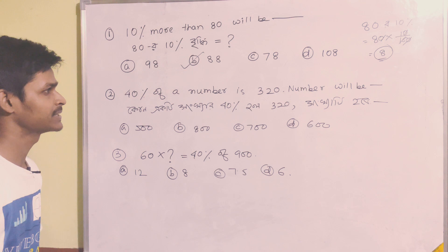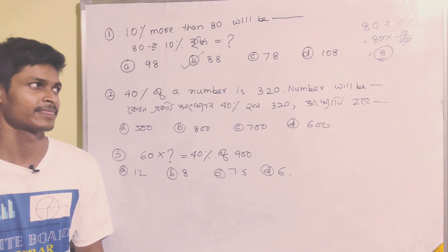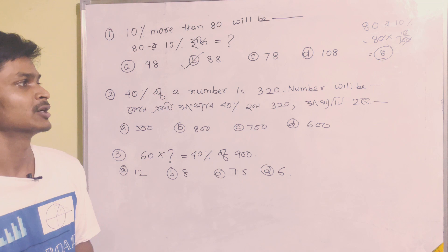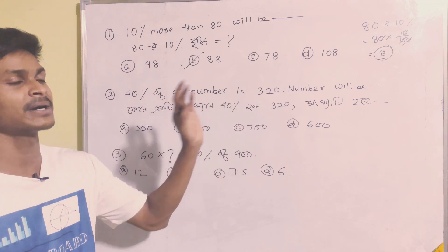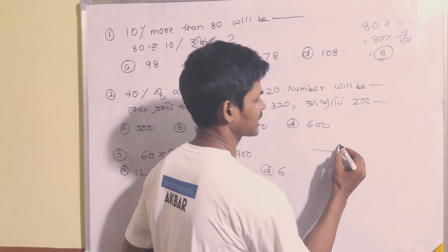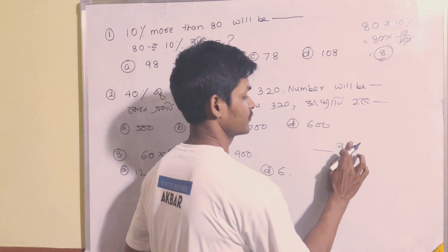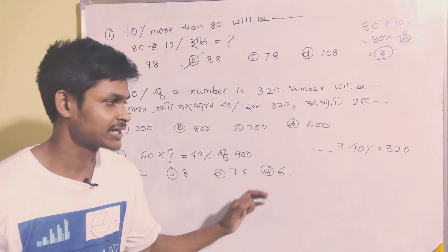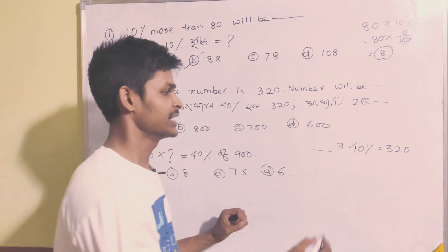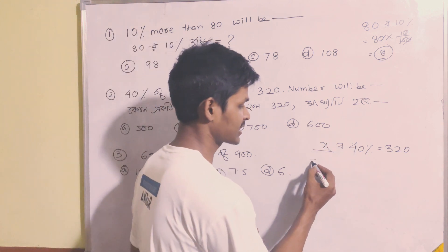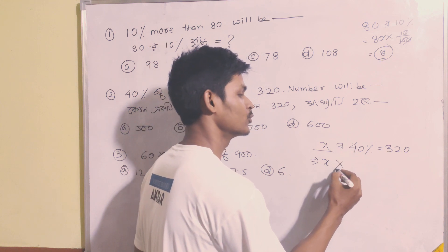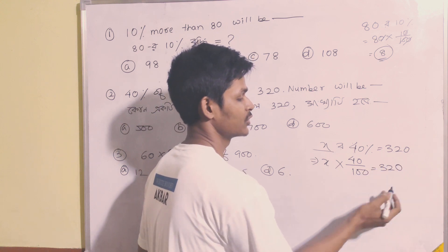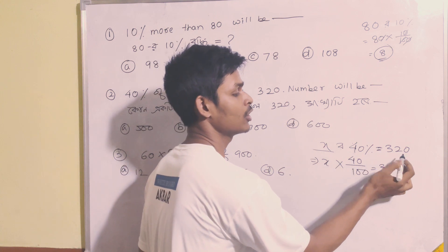Next question: 40% of a number is 320. We need to find the number. Let x be the number, so 40 divided by 100 multiplied by x equals 320.